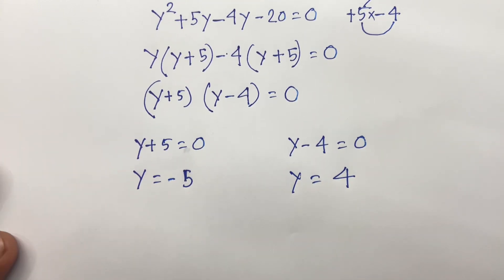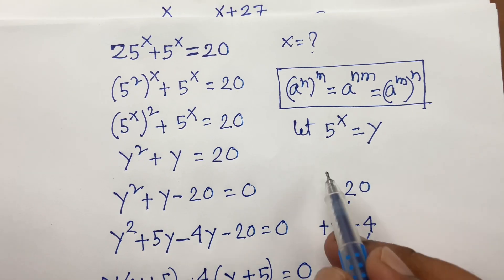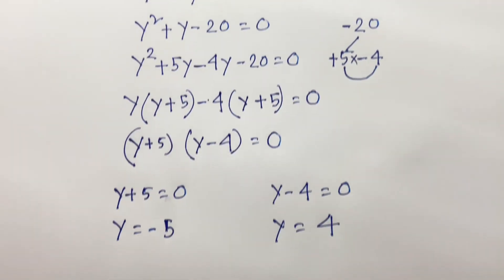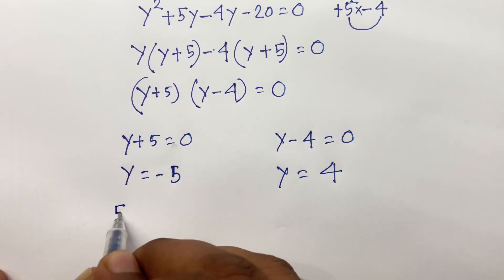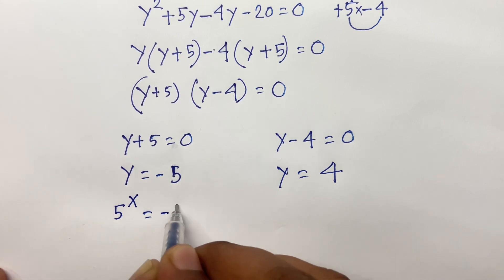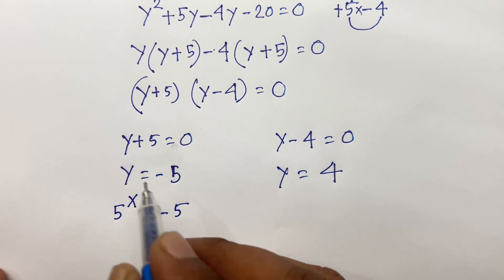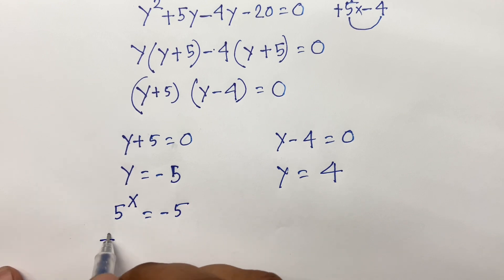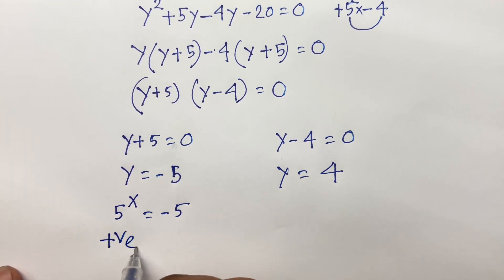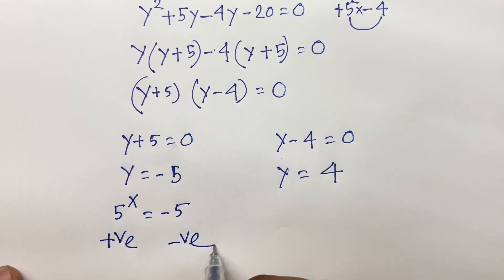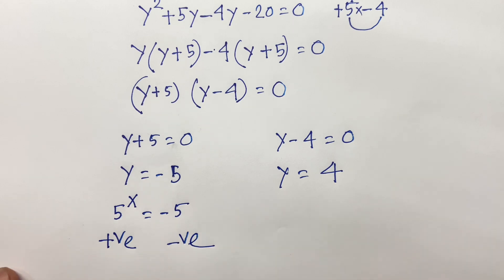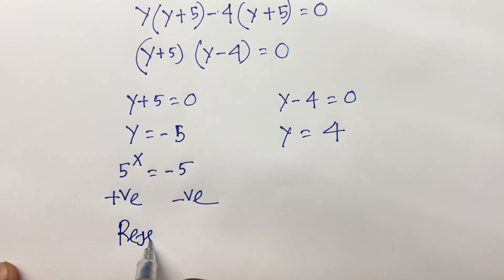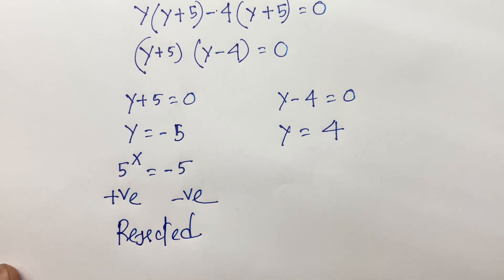Remember that y equals 5^x. So 5 to the power x equals -5. But 5 raised to any number always gives a positive value, not a negative value — so this is rejected.